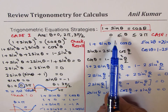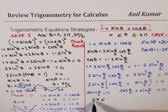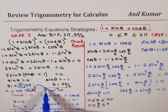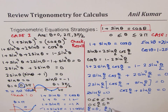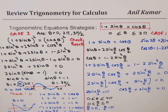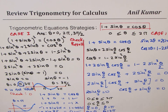Since theta is between 0 to 2 pi, theta by 2 ranges from 0 to pi. For sine(θ/2) equals 0 within this interval, we get θ/2 equals 0 or θ/2 equals pi, which gives theta equals 0 or theta equals 2 pi. So we get two solutions from this condition.